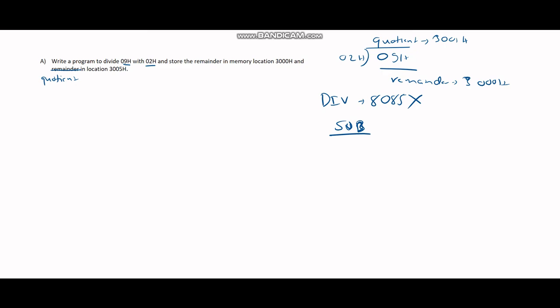Here we're first going to load our values, so let's keep 09H in our accumulator. Then we'll subtract this value with the value 02H. Let's keep it in B and then also have a counter C which we'll use as a counter.